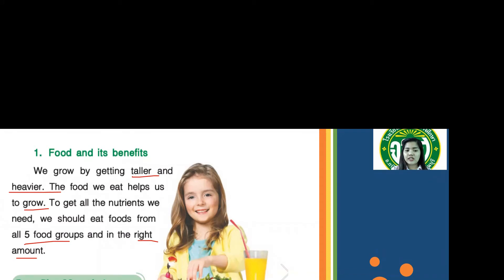Some foods give us energy and keep the body warm. They are food group two, like rice, starch, and sugar — these are carbohydrates. And food group five includes plant fats and animal fats, which are oils from plants and animals.